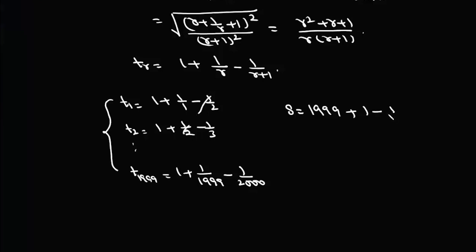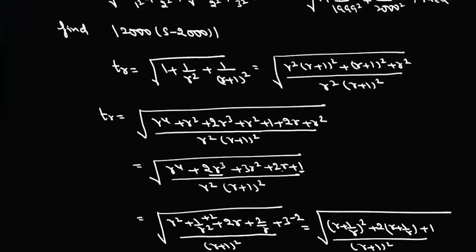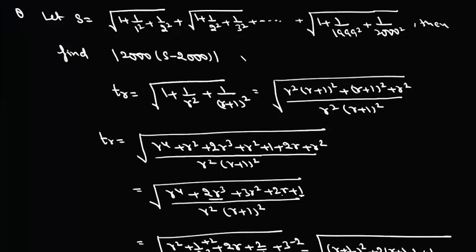After cancellation, we get S = 1999 + 1 − 1/2000, so S − 2000 = −1/2000. Cross-multiplying and taking the modulus, |2000·(S − 2000)| = 1. The answer to this question is simply 1.